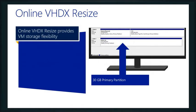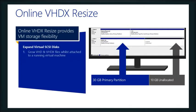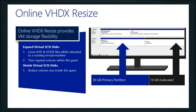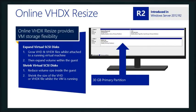Specifically on the VHDX files, we can actually resize them dynamically online. This is something we introduced with R2 — we can even shrink them online as well. So we can grow and shrink our VHD files dynamically through our tools. VMware had the grow capability for a while and we added it; I don't believe VMware can shrink yet, but we can now do both online.